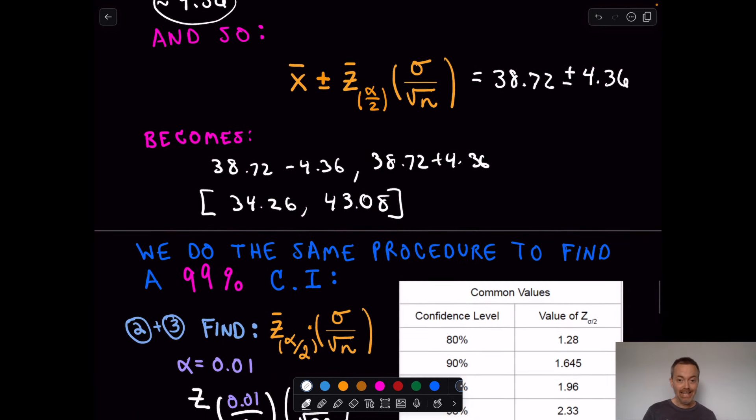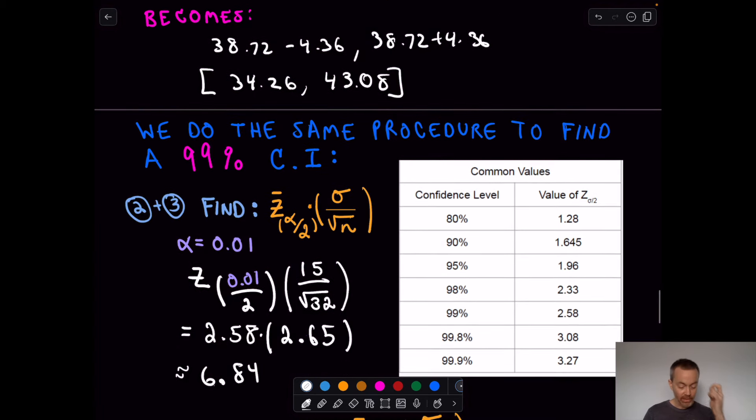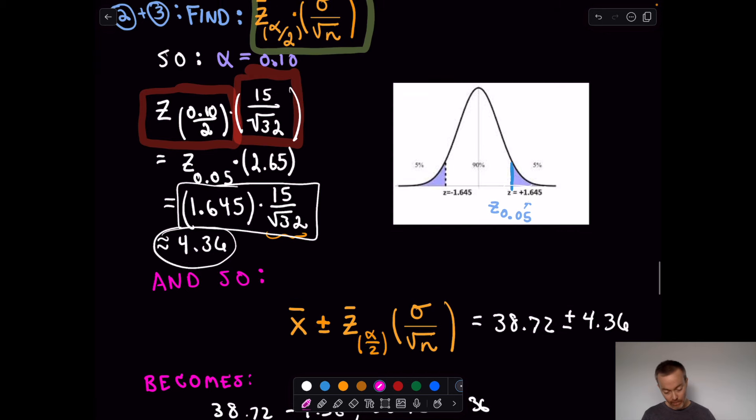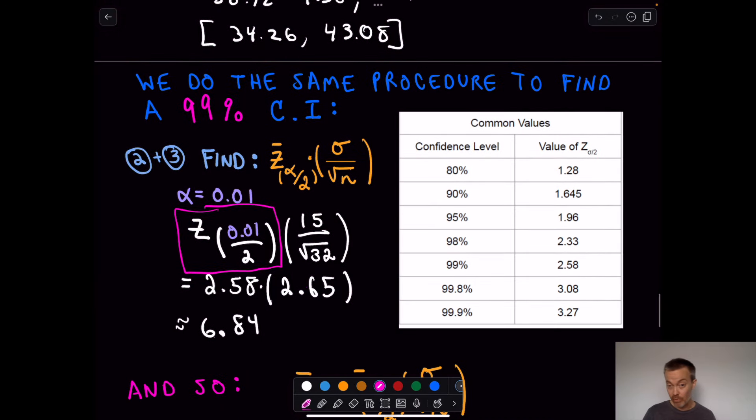What if we want to be 99% confident? There's only one little thing that changes in the computation. And the only thing that changes is going to be that z value. Now, I tried to illustrate it here, you know, just kind of giving you a graphical representation of what's going on. And the second one, I actually gave you a table of values. And this is useful. If this was me and I was taking the class, I would probably jot down this table somewhere in my notes, or at least I would know where to go find it quickly, because it will be useful.